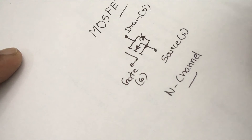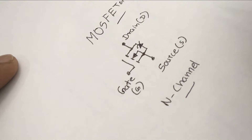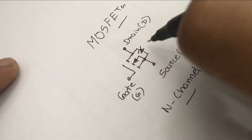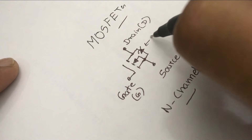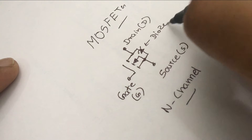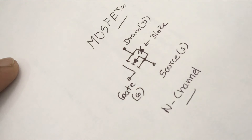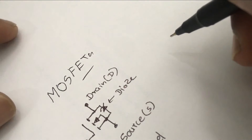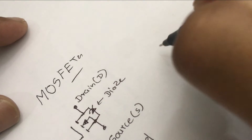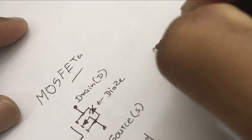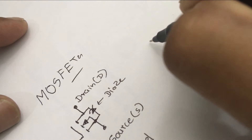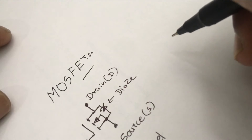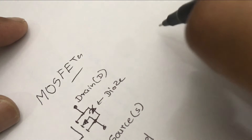This on state, known as saturation, allows a consistent and maximum current flow. Understanding the voltage characteristics is crucial for designing circuits that utilize N-channel MOSFETs for tasks like switching or amplification. These principles apply to both discrete N-channel MOSFETs and those integrated into larger semiconductor devices, contributing to their widespread use in modern electronics.